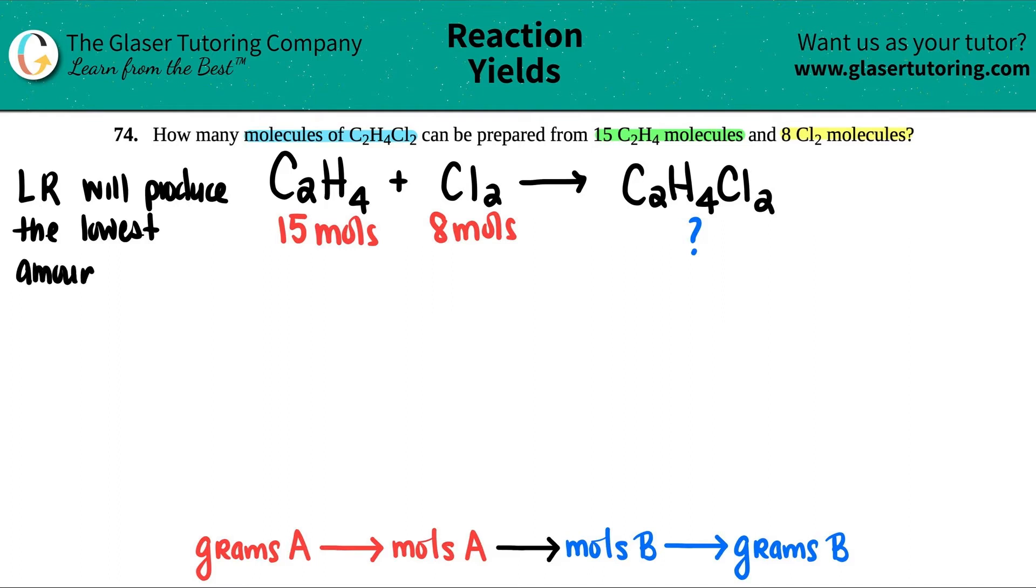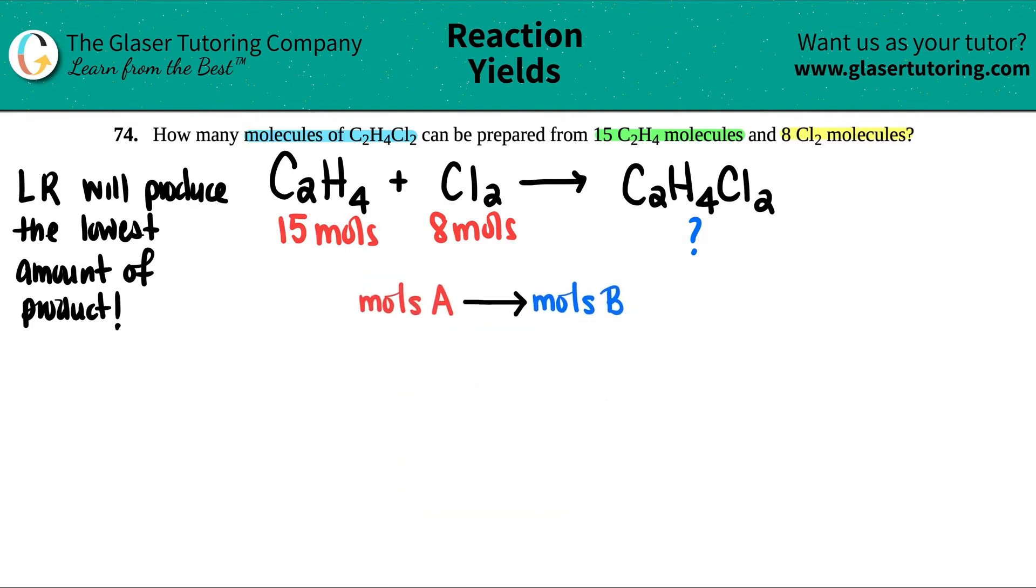So the limiting reactant basically has two different definitions. It's always the one that's going to be used up completely and it's always going to be the one that produces the lowest amount of the product. So we can find out how much we're going to make from both of these and see which one is the lower number. And that's going to be the theoretical yield. Now in this case, since I'm only starting from moles, I can get rid of this gram down here. And we could only end at moles because they're not asking for a theoretical yield or anything. So we try to do the most minimal amount of work to get the right answer. So in this case, you have to do both. So I'm just going to get rid of these. And we just have to do this twice.